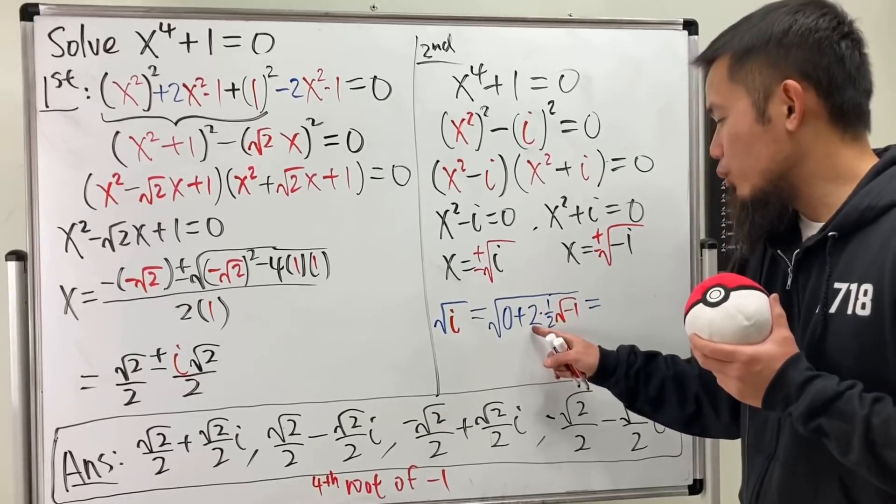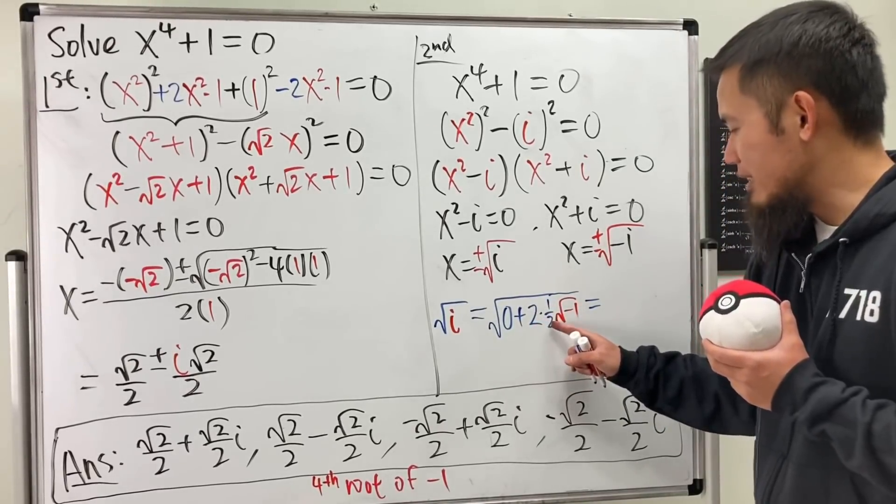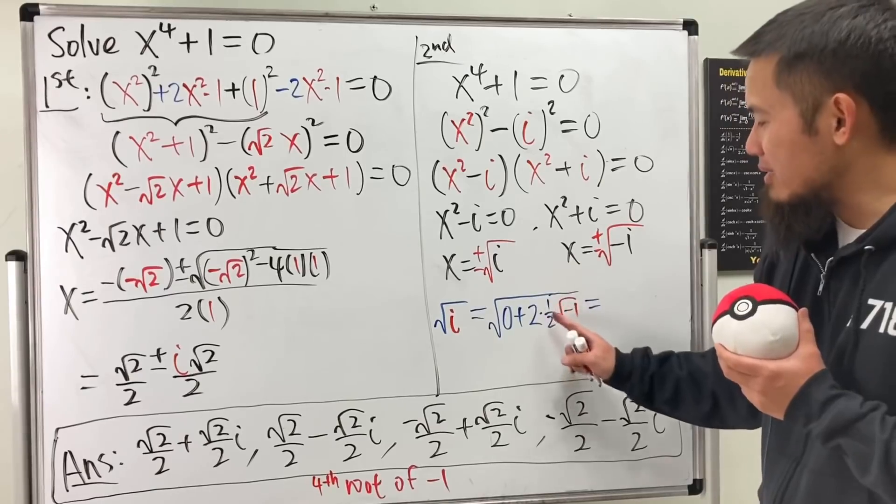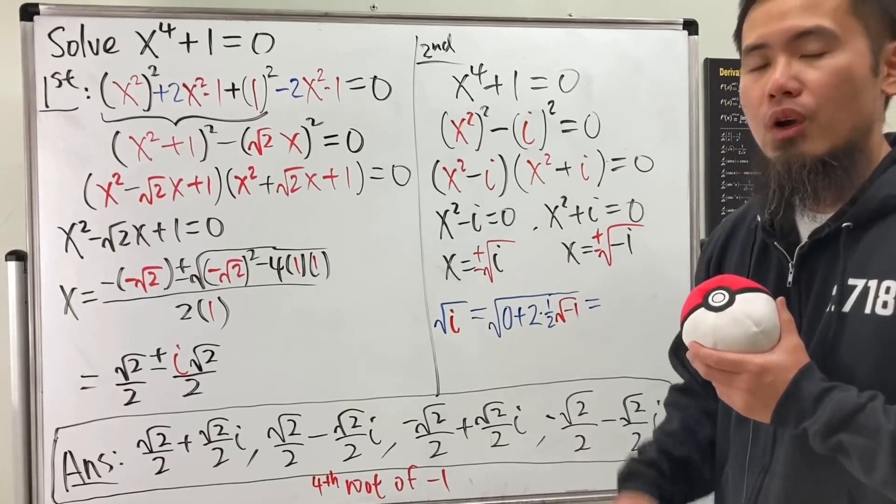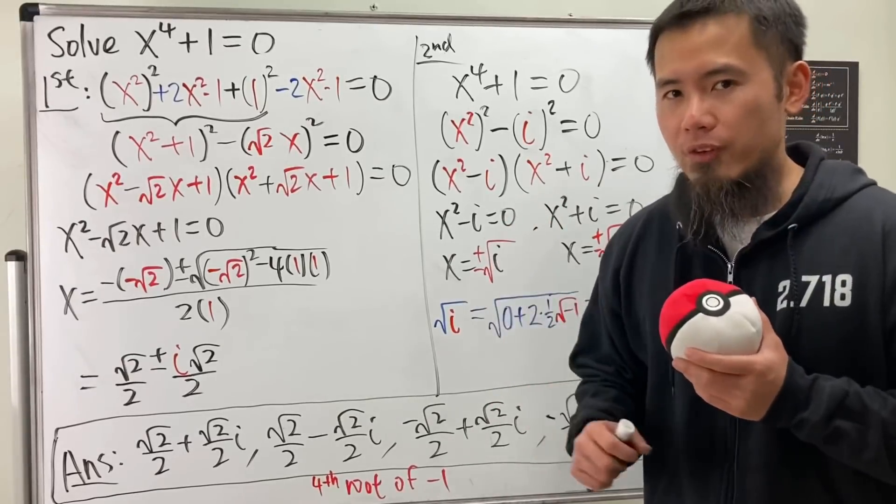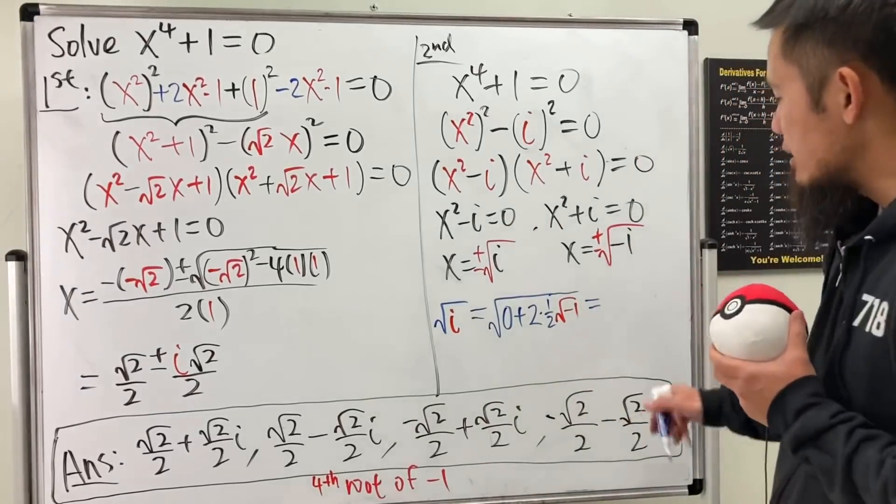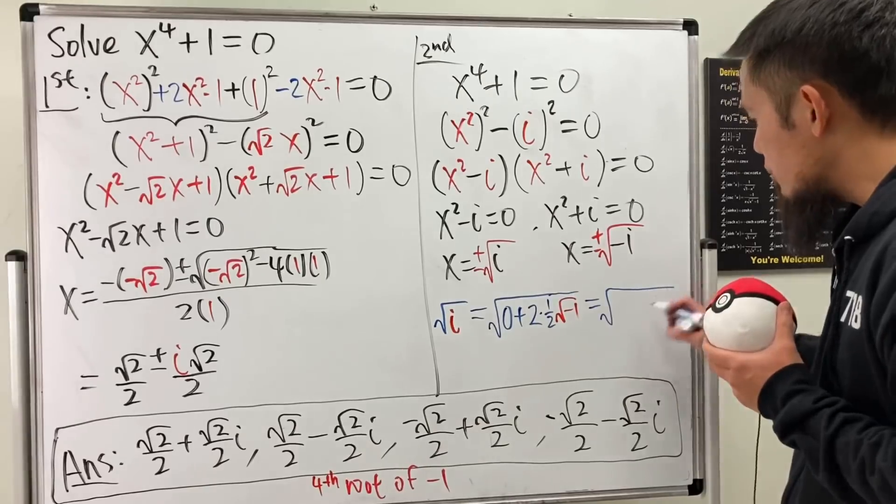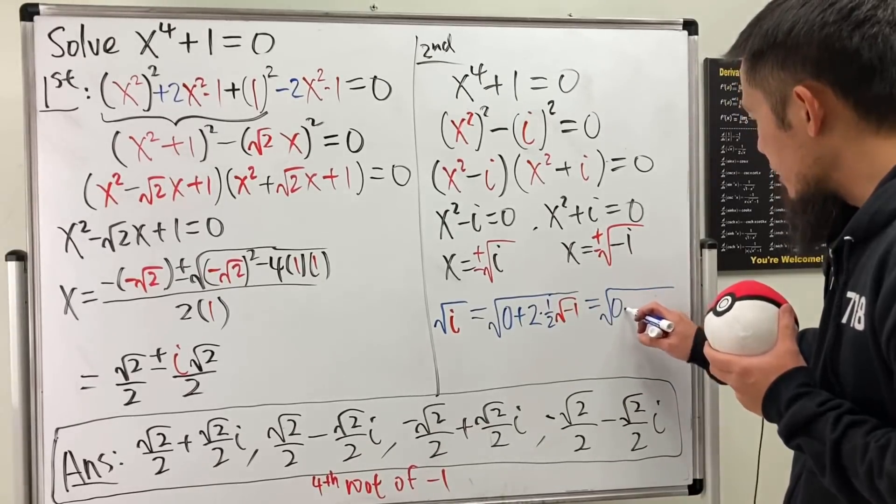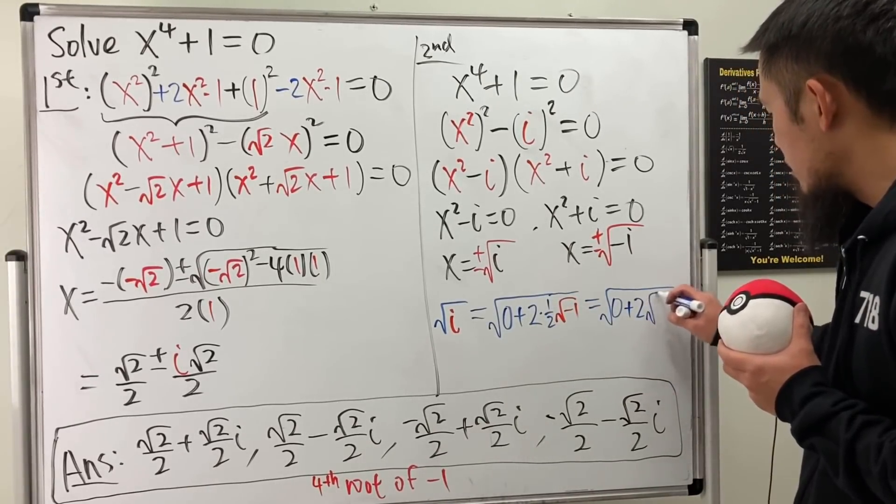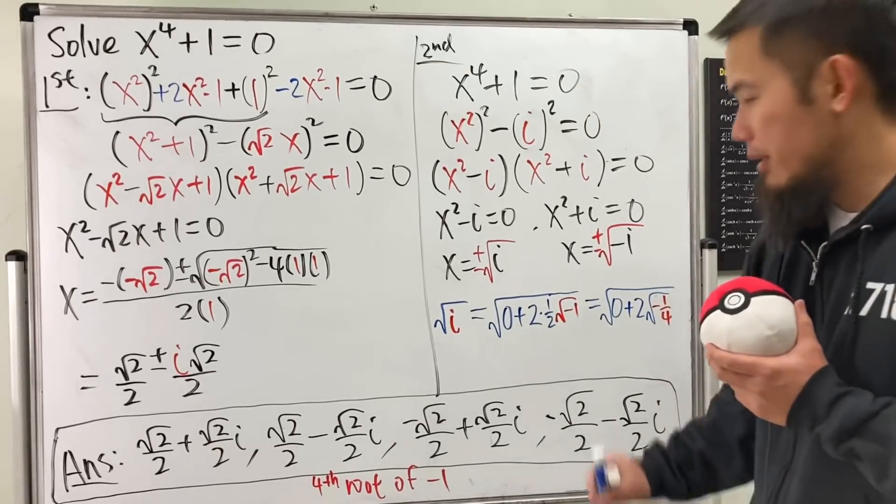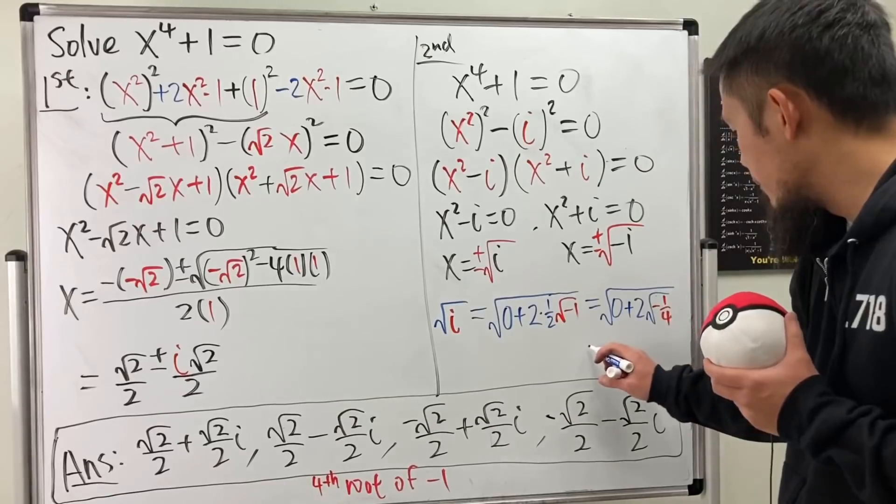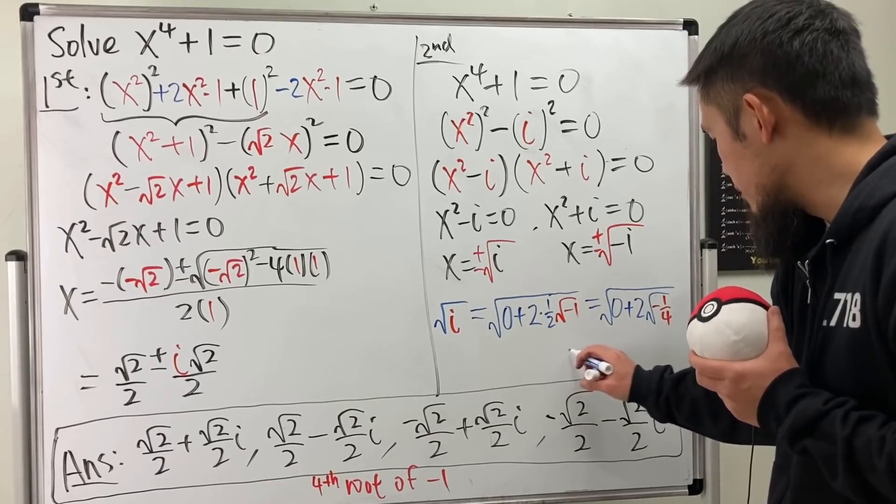Now, as I told you, we need to have a two. This one half is not really invited right here in this space. I need to bring this inside of this square root. One half is the same as one over four in the square root. So I'll just put that inside. So this becomes the square root of zero plus two square root of negative one over four. Right?